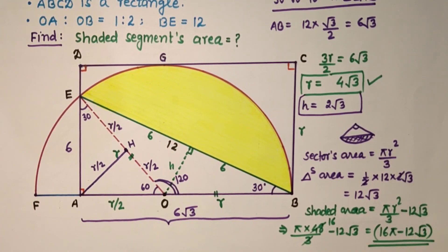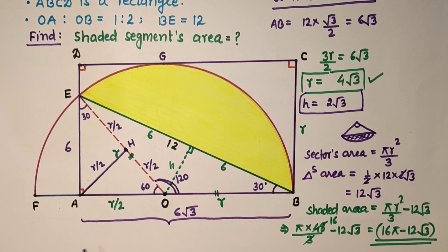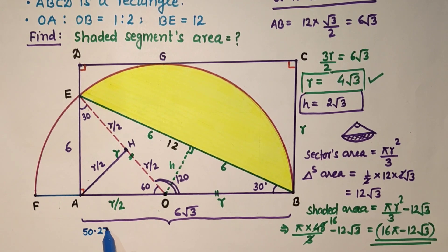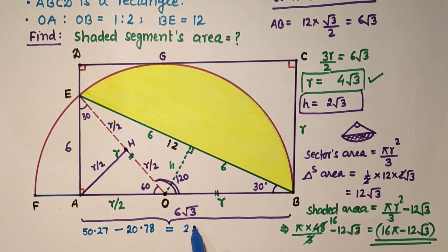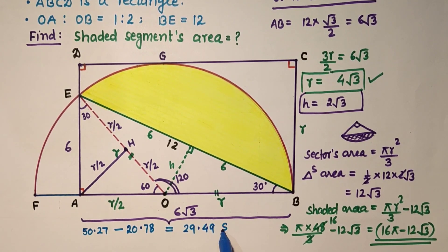The area of the shaded portion is 16 pi minus 12 root 3, which is approximately 50.27 minus 20.78, equal to approximately 29.49 square units. That is the final answer.